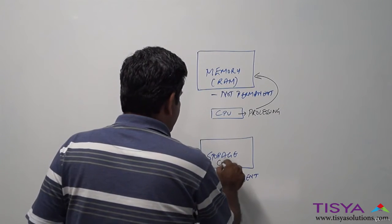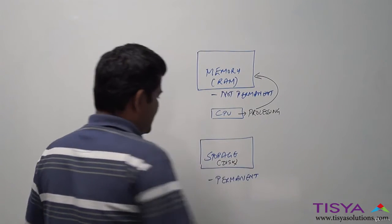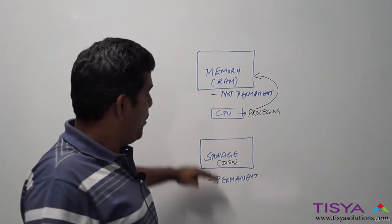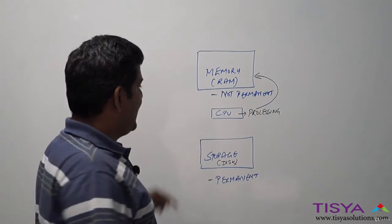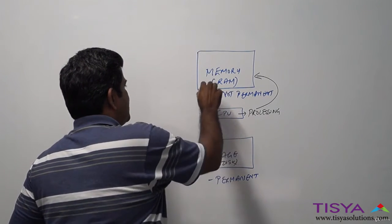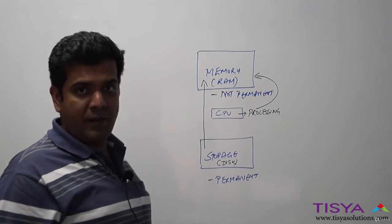So storage, or otherwise disk which is permanent, cannot be worked on directly. This means if I want to work with any data, I need to read it from the storage, bring it into the memory, and then my CPU can work on it.